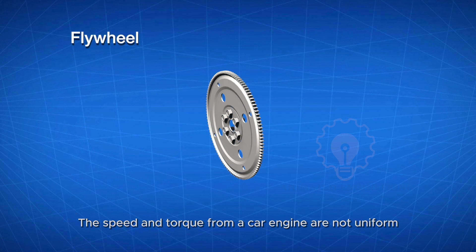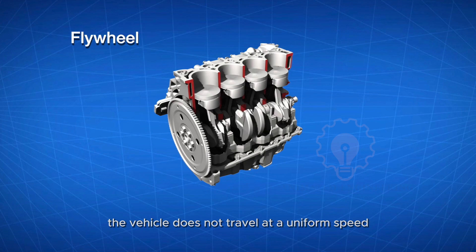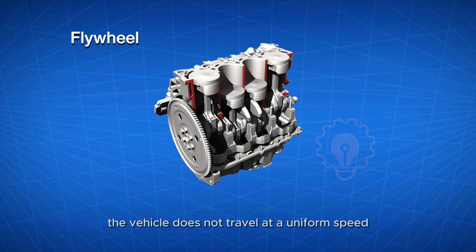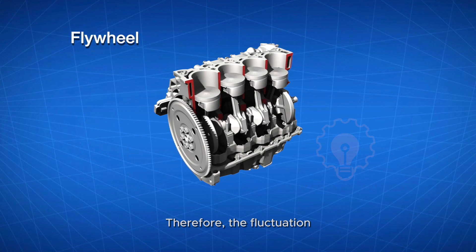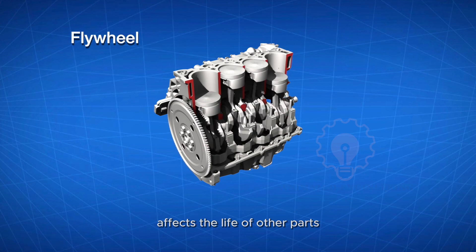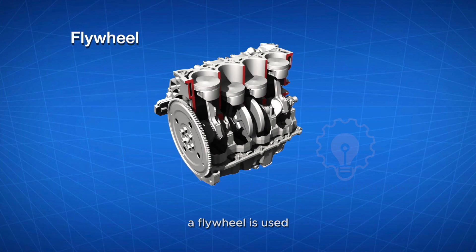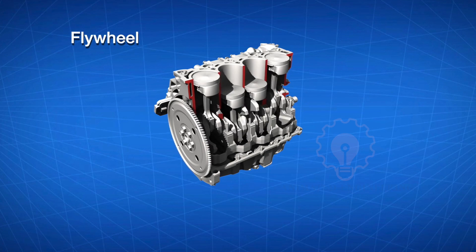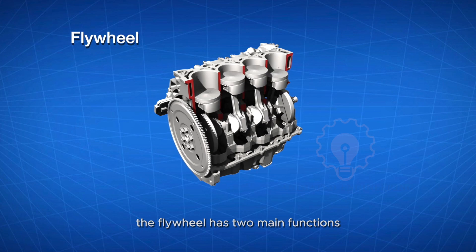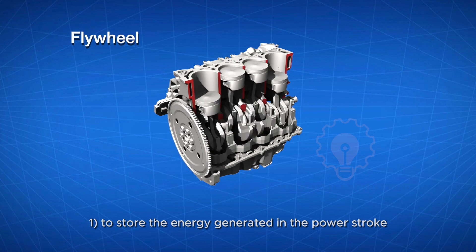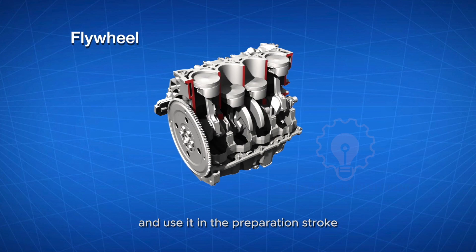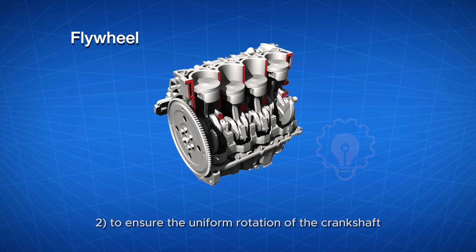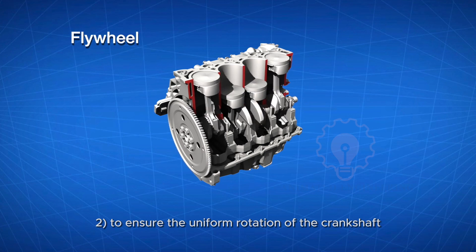Flywheel: The speed and torque from a car engine are not uniform. Because of this, the vehicle does not travel at a uniform speed. Therefore, the fluctuation affects the life of other parts. To avoid this, a flywheel is used. The flywheel is mounted on the crankshaft to balance the vehicle speed. The flywheel has two main functions: first, to store the energy generated in the power stroke and use it in the preparation stroke, and second, to ensure the uniform rotation of the crankshaft.